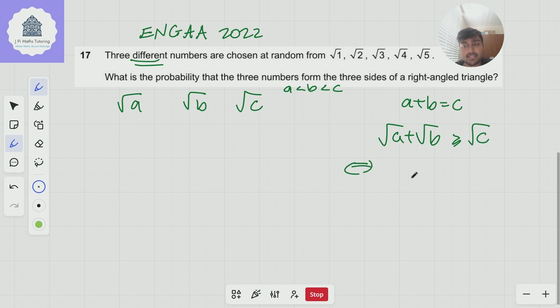So does root a plus root b that must be at least root c and this is true if and only if well if I square both sides this inequality upholds and I'm allowed to square both sides here because both of these terms are non-negative in fact strictly positive here and I get a plus b plus two root ab is at least c and now we can see that this is obviously true because if a plus b equals c those cancel out and I get two root ab is at least zero which is obviously true.